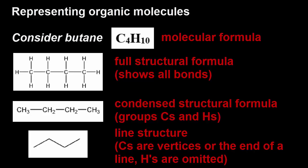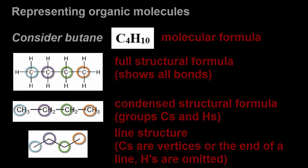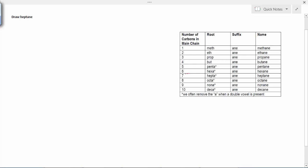The carbons are the vertices, or the end of a line, while the hydrogens are omitted completely. I'm going to circle the first, second, third, and fourth carbon atom of butane in each of the three representations. So you can hopefully pause and compare those.